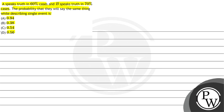So the probability that they will both say the same thing — both say truth or both say lie. Let us consider two events. Event E1: A speaks truth. Event E2: B speaks truth.